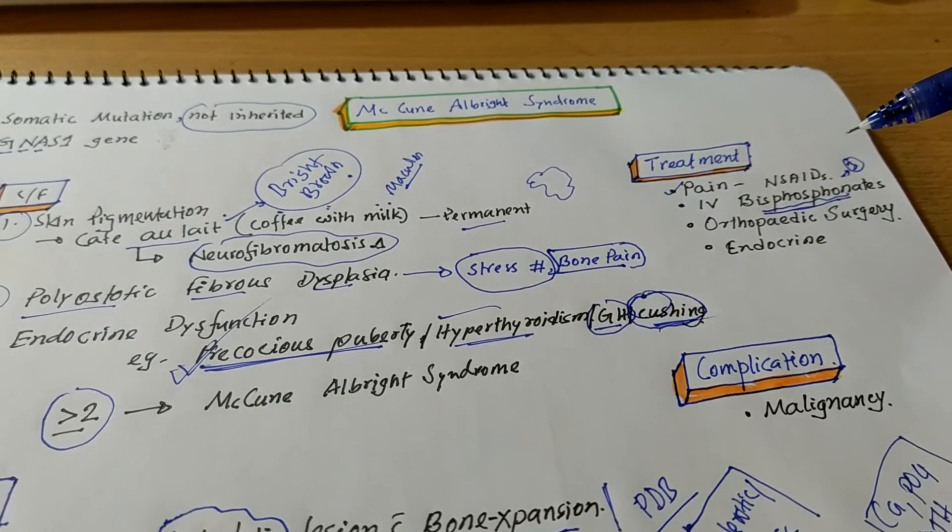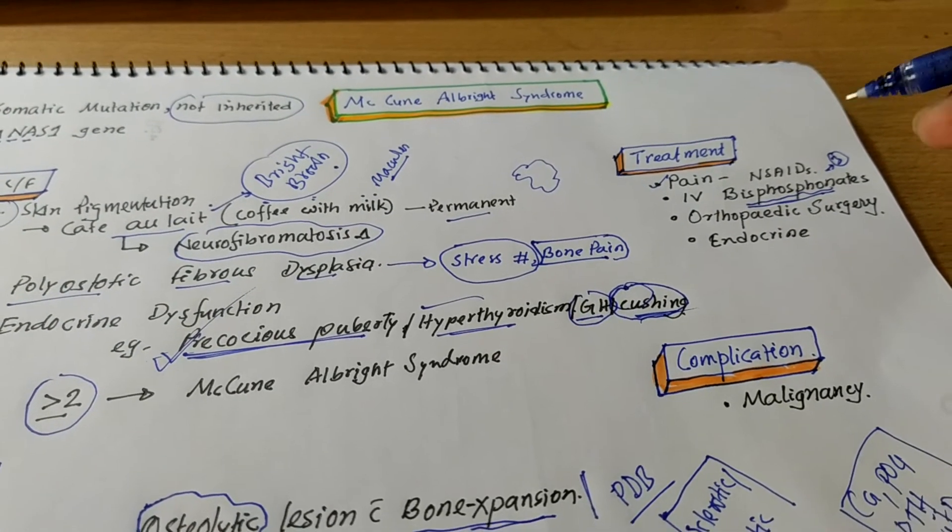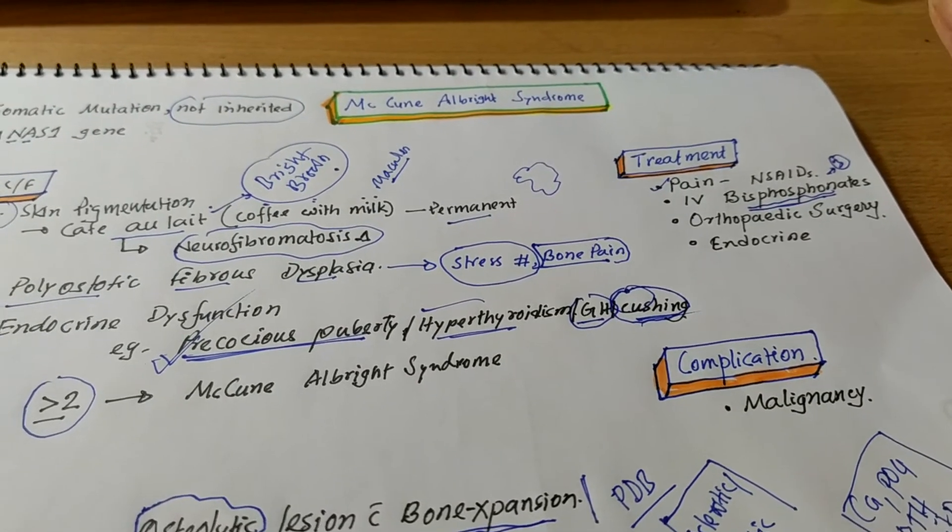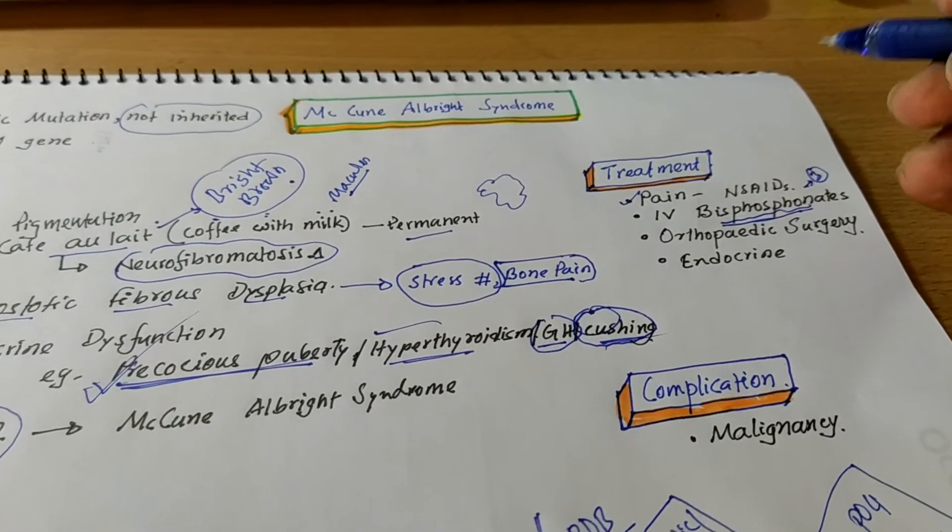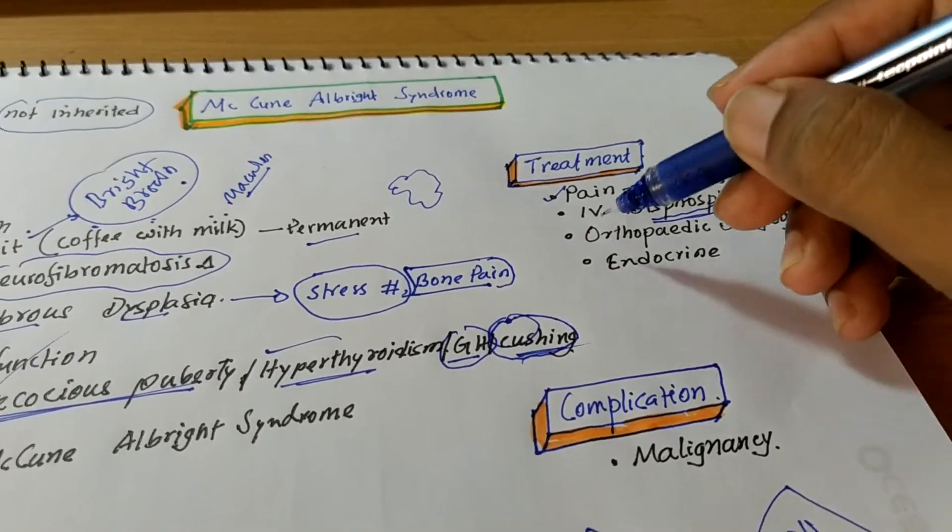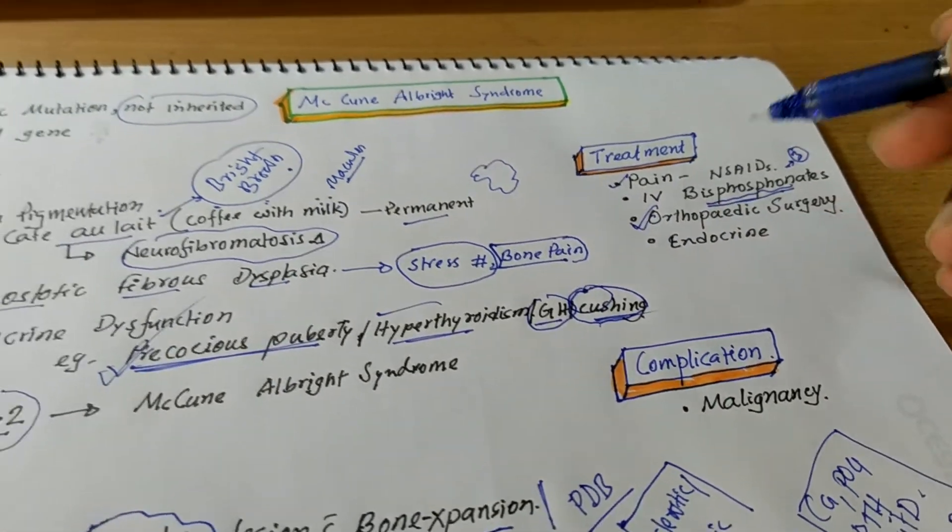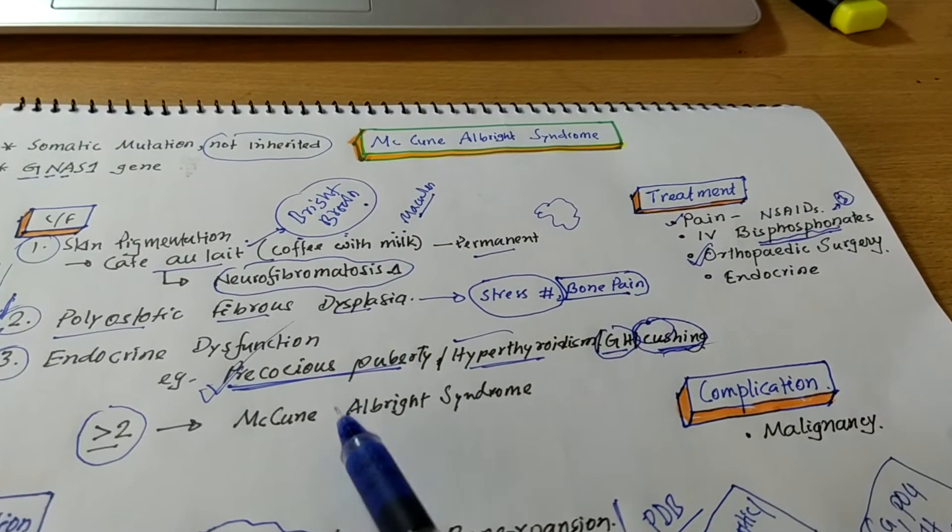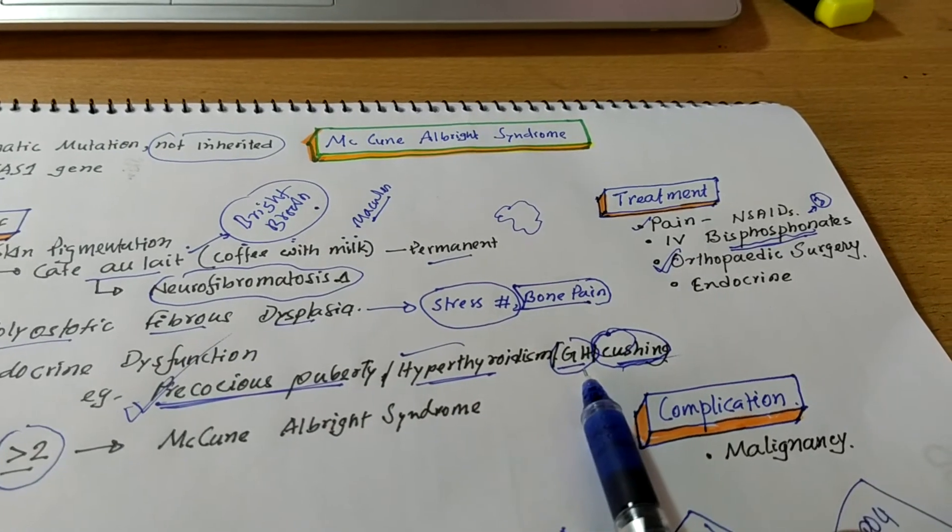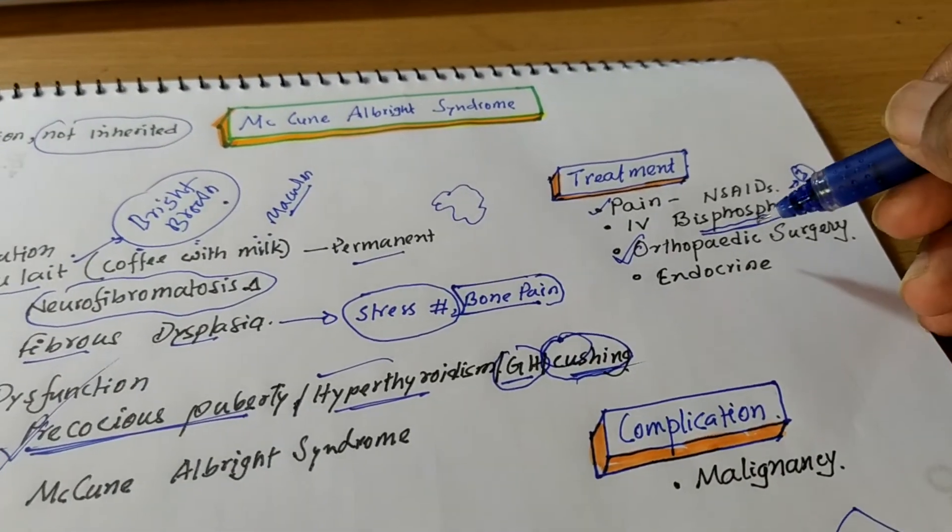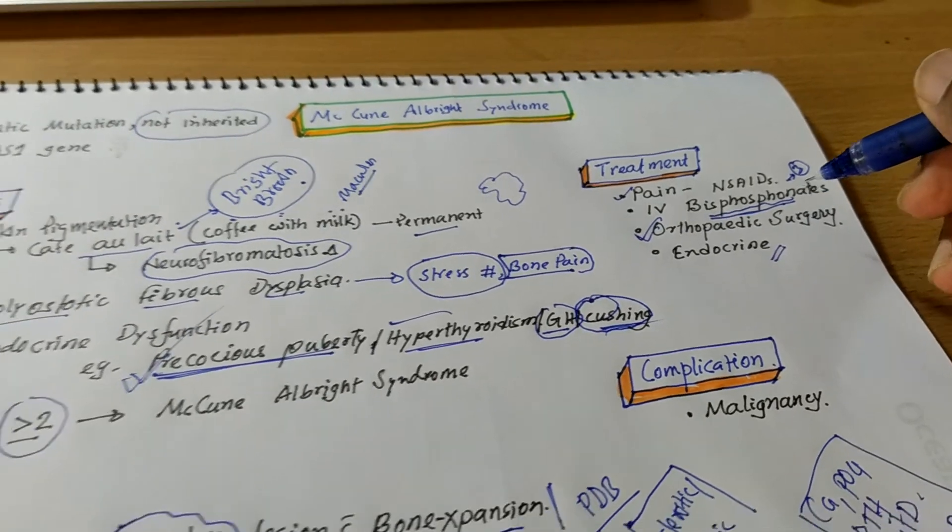And for the correction of fracture or any other bone deformity, corrective orthopedic surgery may be needed. And for the endocrine problems like precocious puberty, hyperthyroidism, growth hormone excess, Cushing syndrome, appropriate endocrine management should be needed.